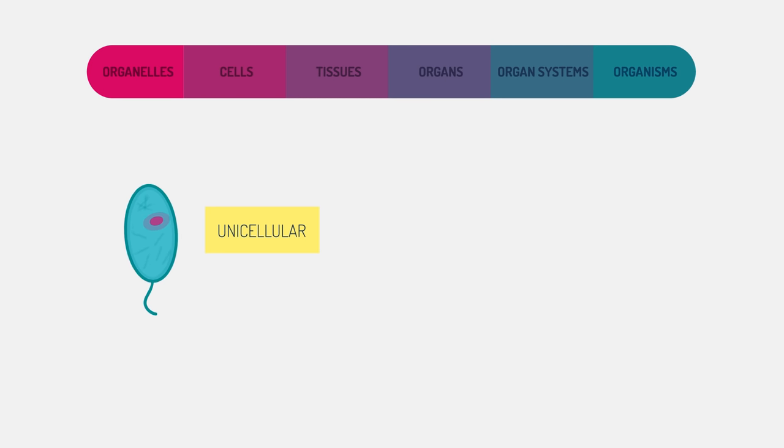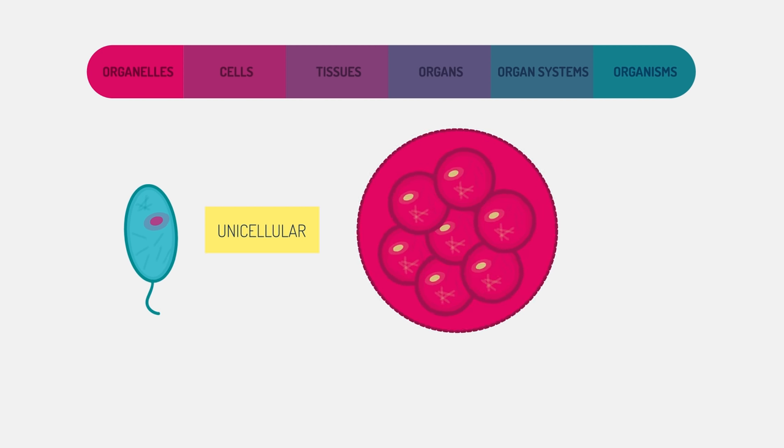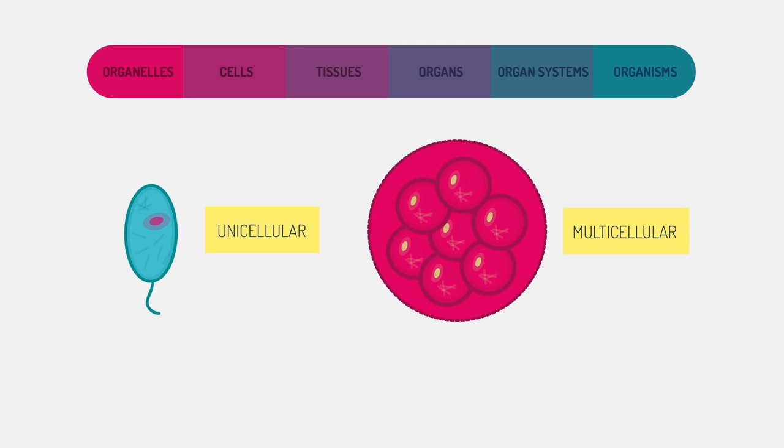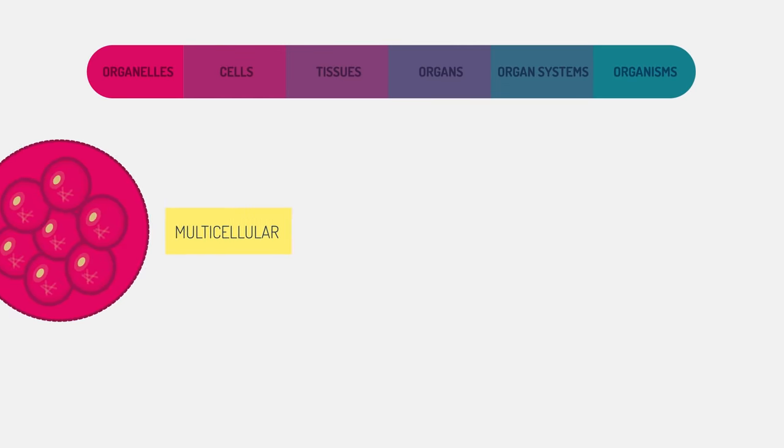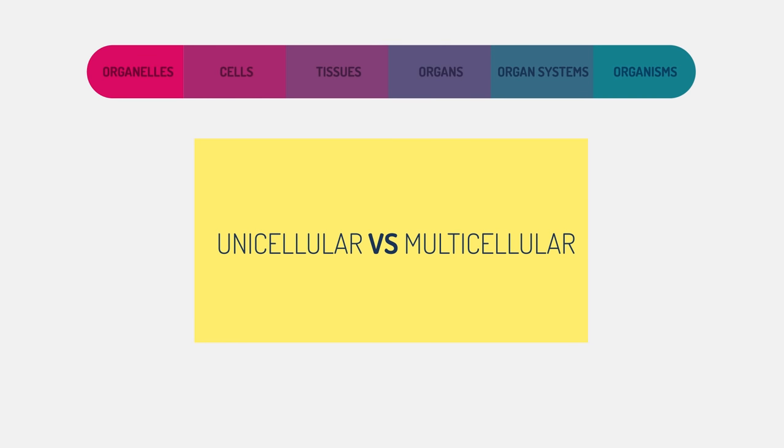In unicellular organisms, the single cell performs all life functions. However, multicellular organisms have various levels of organization within them. To learn more about the differences between unicellular and multicellular organisms, watch this video.